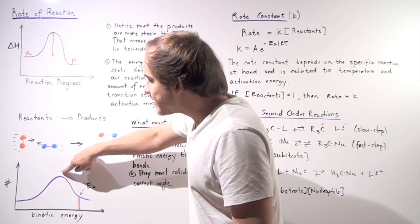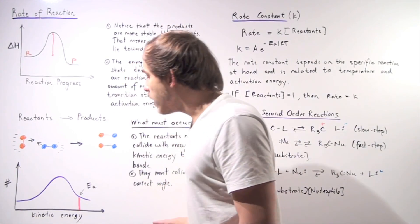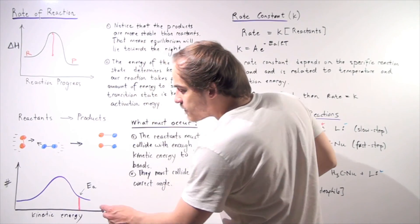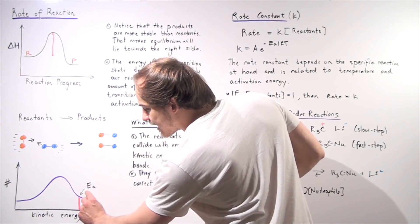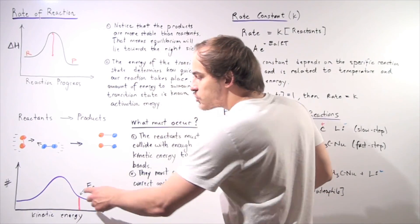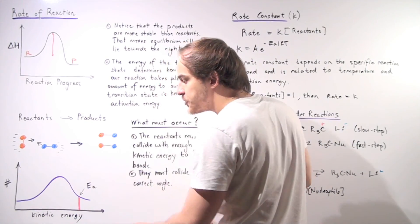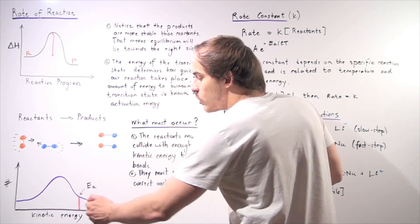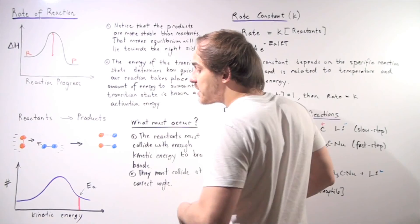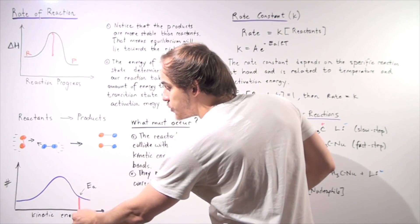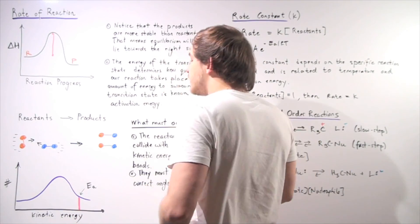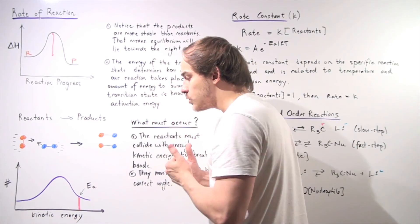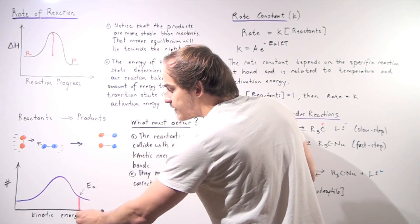Notice that this apex, this hill, represents the average number of molecules that have a certain kinetic energy. And this line here represents the activation energy. In this situation, most of the molecules don't actually have enough energy to climb this energy barrier because this energy is so high.